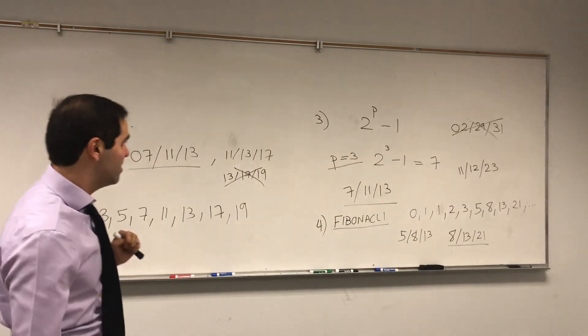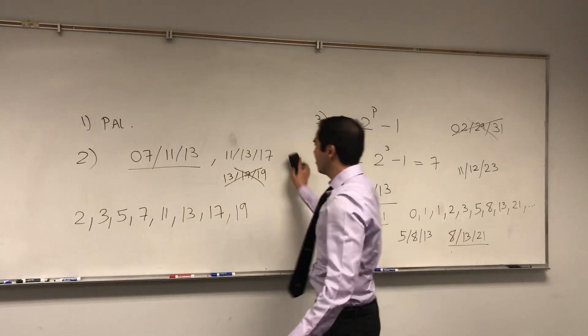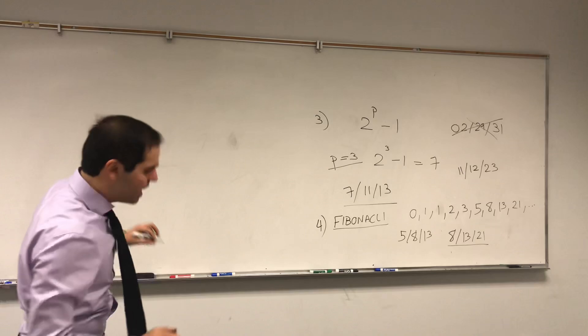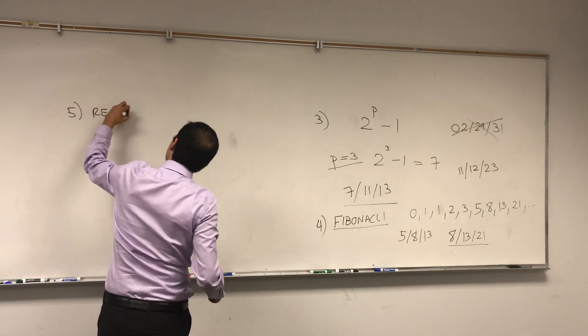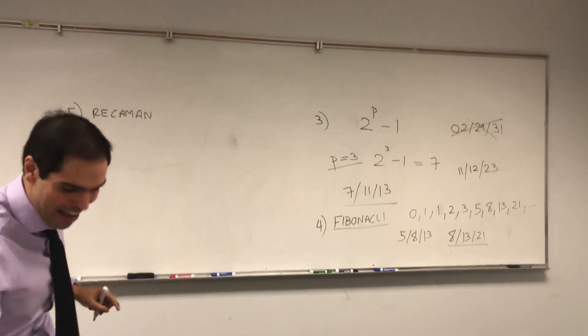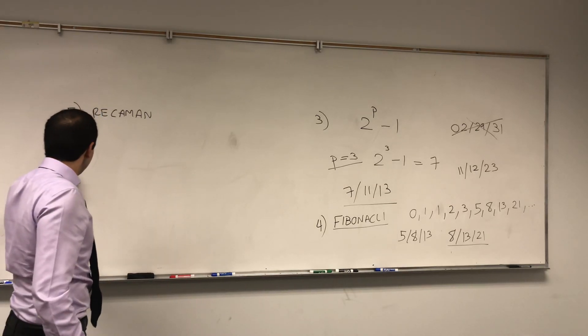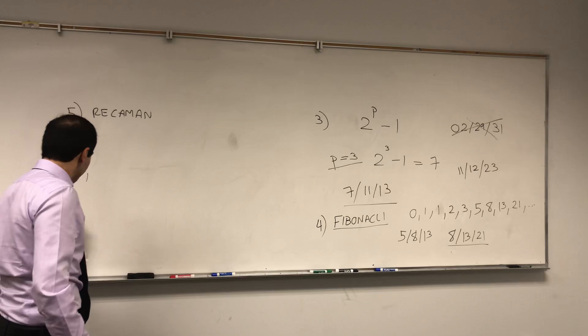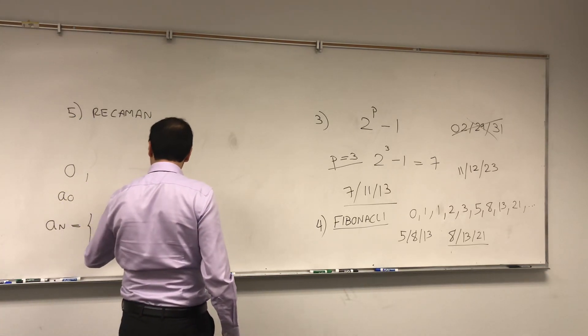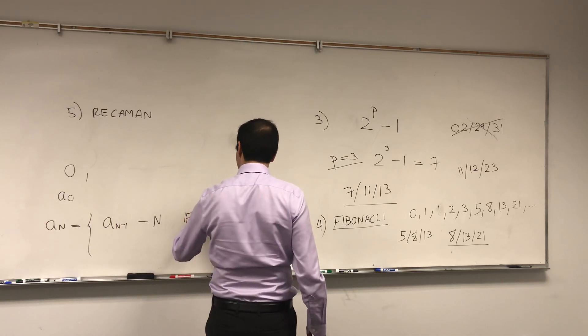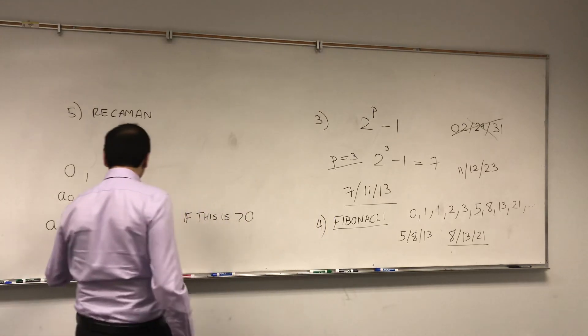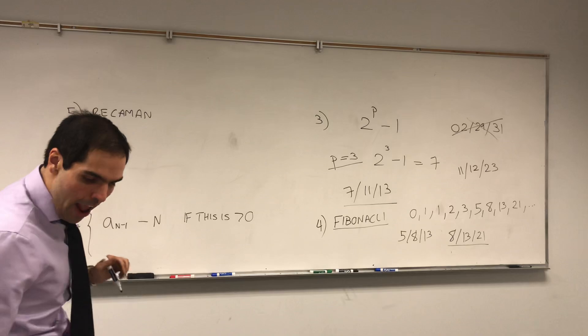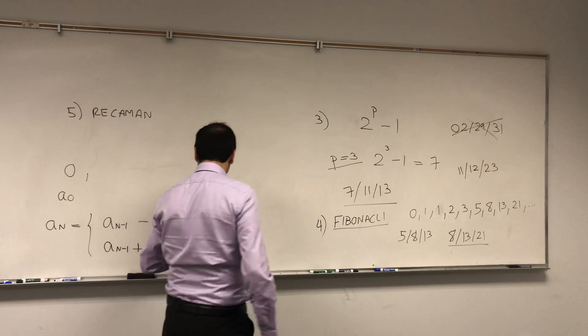And then there are two other very exotic ones that I didn't know before, but they're actually pretty useful, at least mathematically. The next one is what's called the recommend sequence. And how does it work? So it's very interesting. You start with zero. So a zero is zero. And then the next term is defined as follows. a_n, either it's the previous term minus n if this is positive, or if it's positive and not already in the sequence. So we really want a sequence of different digits, or a_n minus one plus n elsewhere.